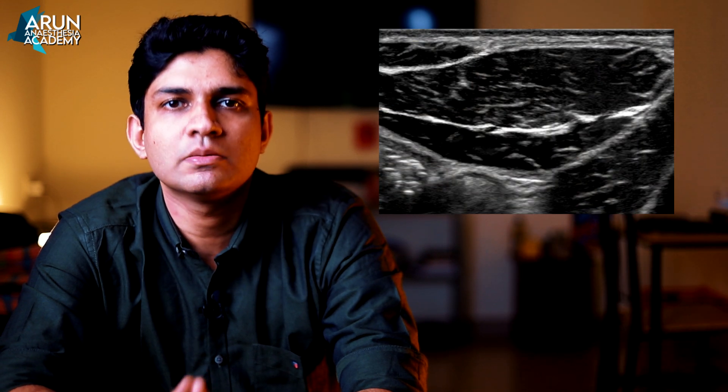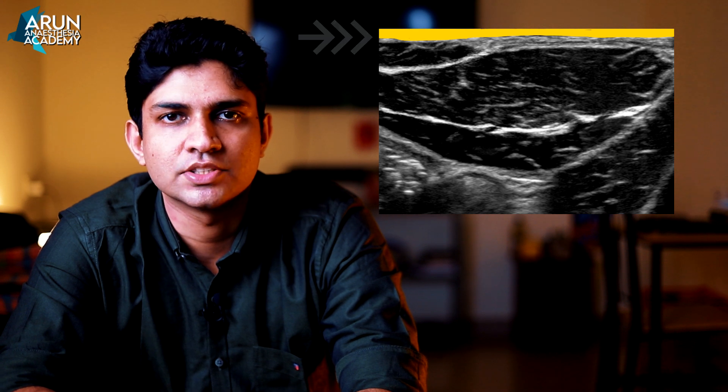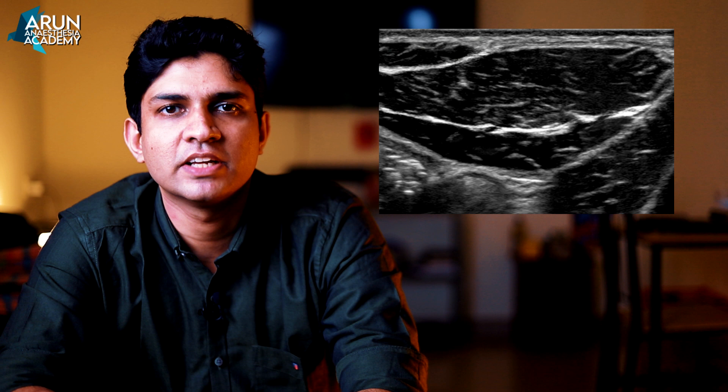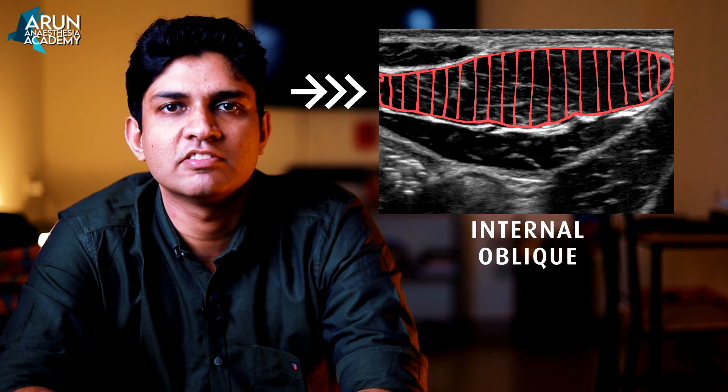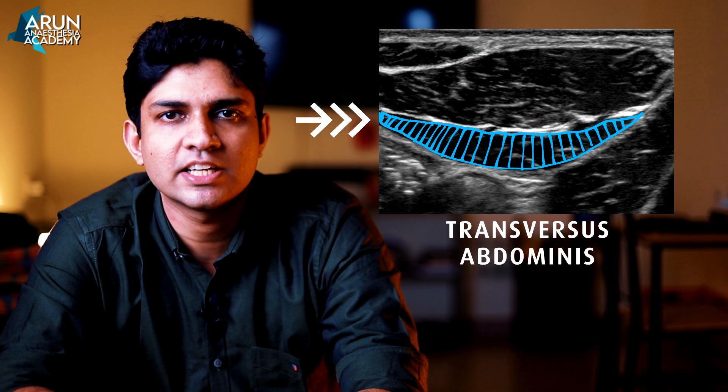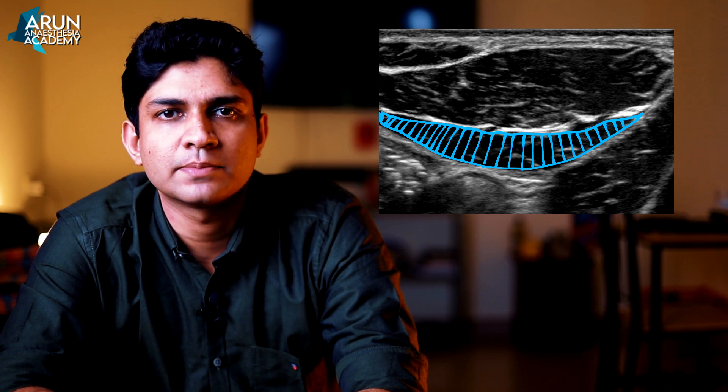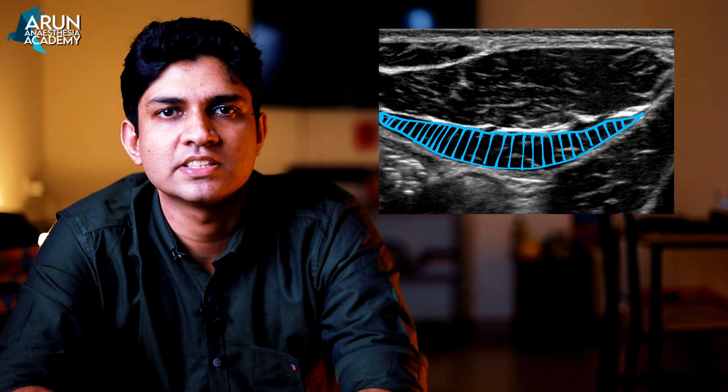Scanning is done with the patient in supine position using a high-frequency linear transducer probe. One end of the probe is kept medial to the anterior superior iliac spine, oriented on the line joining the anterior superior iliac spine and the umbilicus. The structures visible from superficial to deep are: subcutaneous tissue, then the three muscles — external oblique, internal oblique, and transverse abdominis. The internal oblique is the thickest of the three, and the transverse abdominis is the thinnest. Deep to the transverse abdominis we can also see the transverse abdominis fascia, similar to what we see in the TAP block.